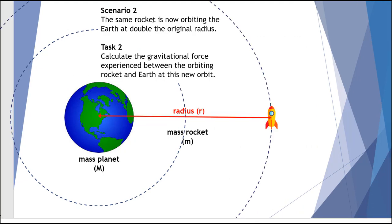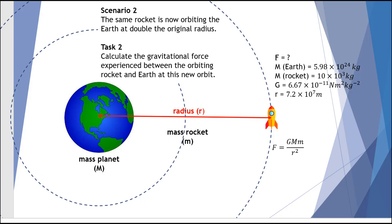What happens now if we have the same rocket orbiting the Earth at double the original radius? Our task is to calculate the gravitational force at this new orbit. The new radius, which is double the original 36,000 kilometres, is 7.2 × 10⁷ metres — be careful, when we have kilometres we need to multiply by a thousand. Here's our equation again — substitute the values in, make your calculation, pause, and come back when you're done.